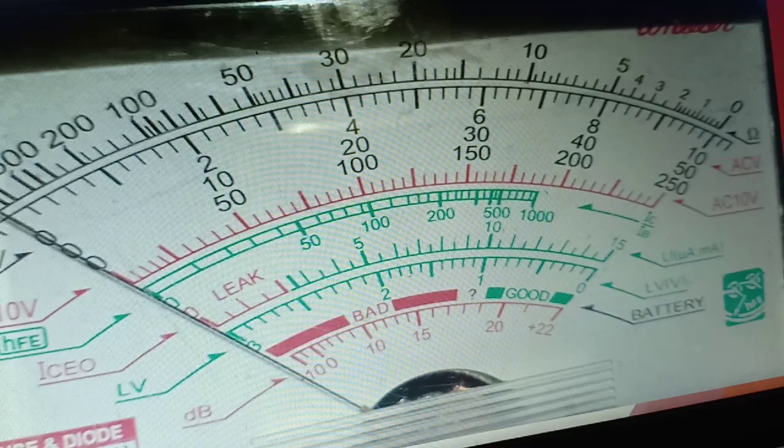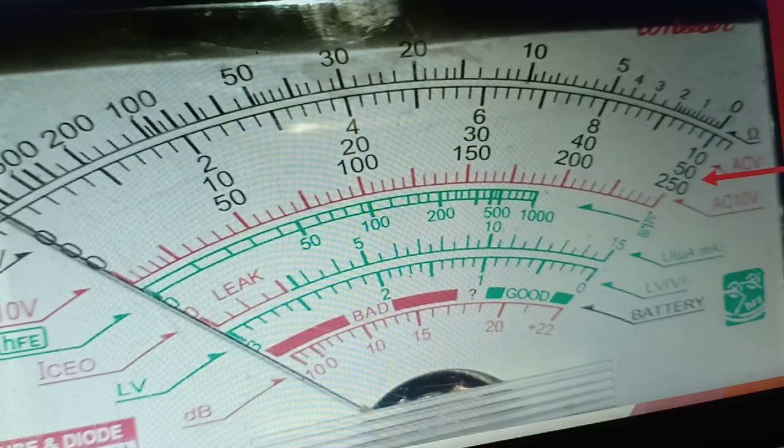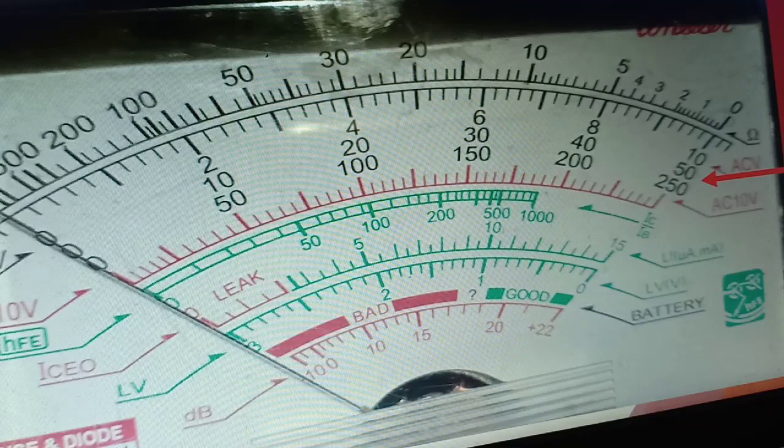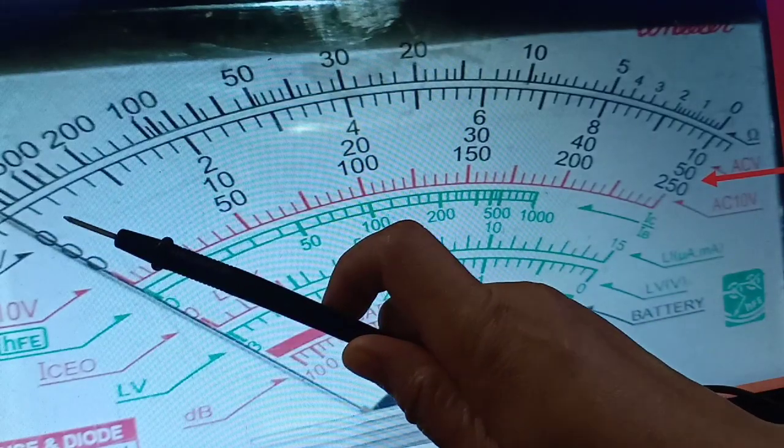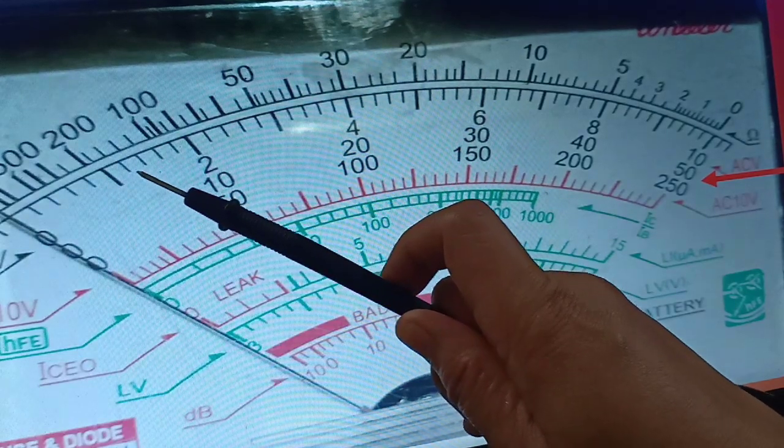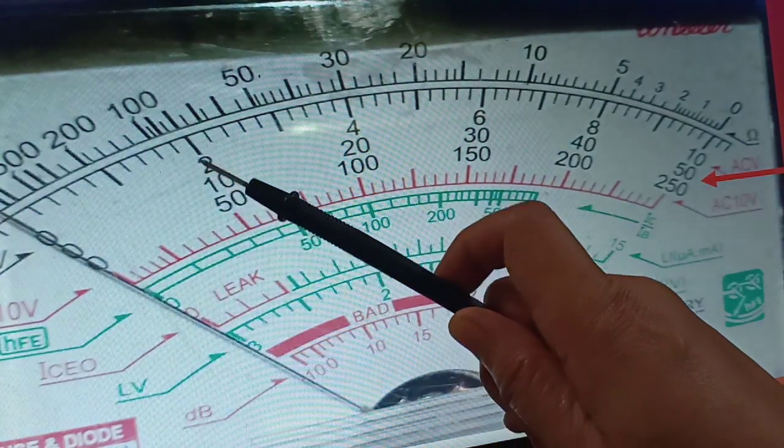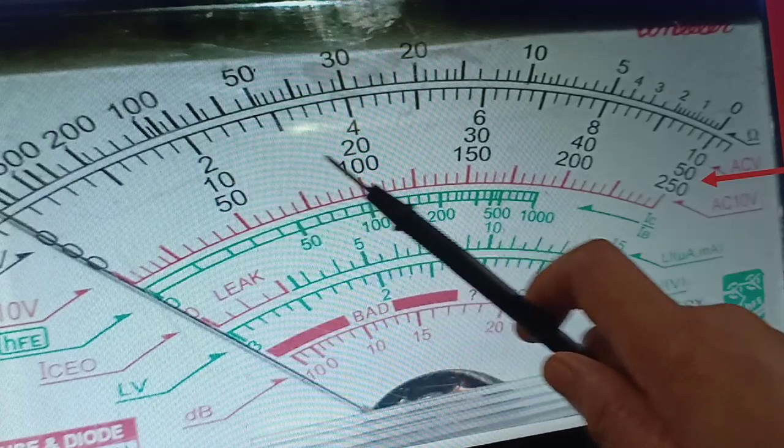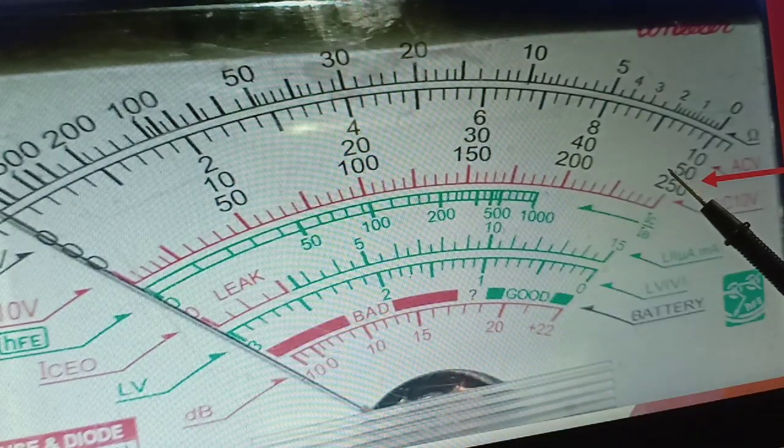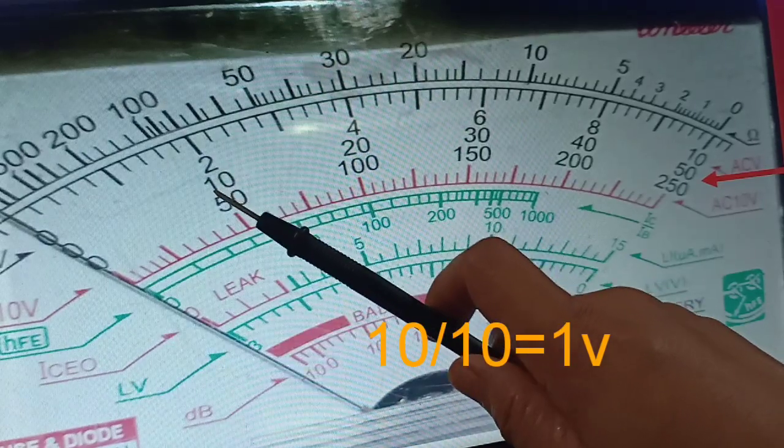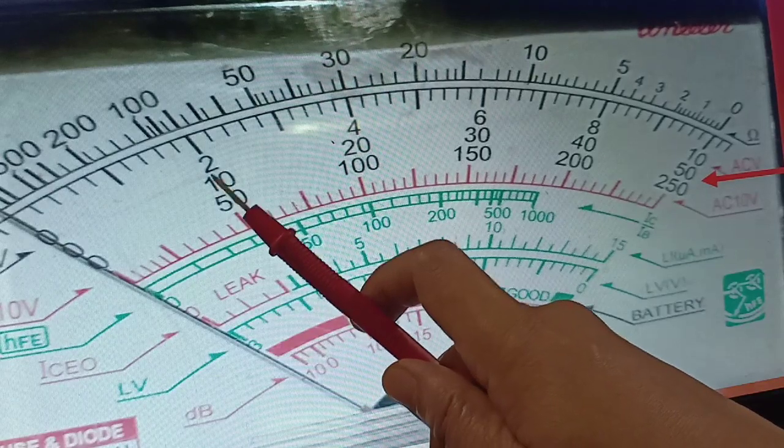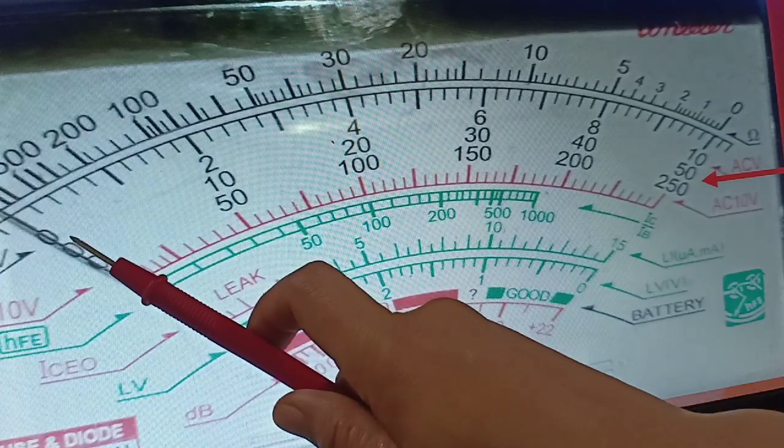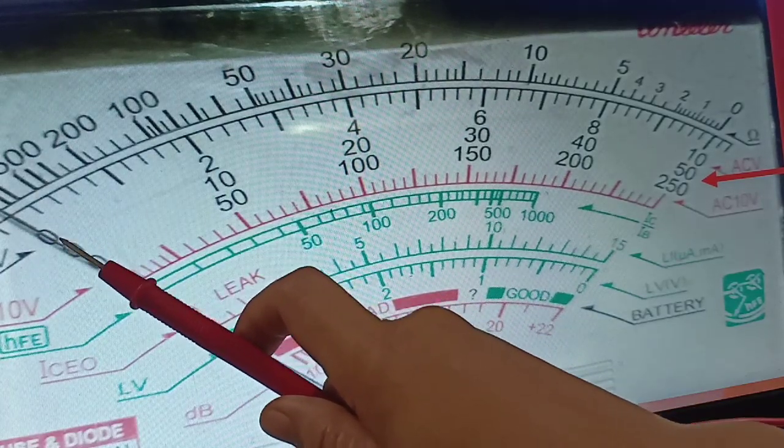Now, what if the setting becomes 50? What if we are going to set the selector knob to 50 volts? Let us count again the number of lines. We have 1, 2, 3, 4, 5, 6, 7, 8, 9, 10. Since this is set into 50, this is equivalent to 10, 20, 30, 40, 50. And there are 10 lines. 10 divided by 10 is 1. Therefore, each line is equivalent to 1.